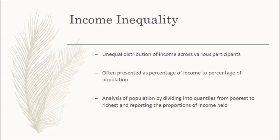For example, say the bottom 20% of the population holds 20% of the economy's income and the top 20% also holds 20% of the income — then we can call that society highly equal. But realistically, that's hardly the case, as the bottom 20% of the population hardly owns more than 3% of the total wealth of the economy. This is where inequality creeps in.